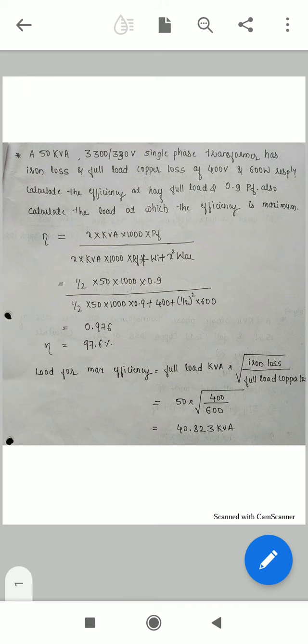For the load at maximum efficiency: full load kVA = square root of (iron loss / copper loss). We get 40.833 kVA.